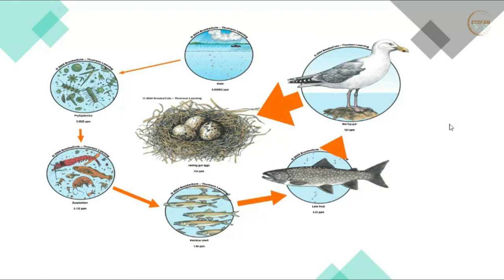Another example is Minamata disease. Mercury chloride found its way into Minamata Bay in Japan — in the same way, mercury gets captured in phytoplankton and zooplankton and accumulates over trophic levels. Fishes consumed by humans caused mercury poisoning, as mercury causes various disorders in humans.